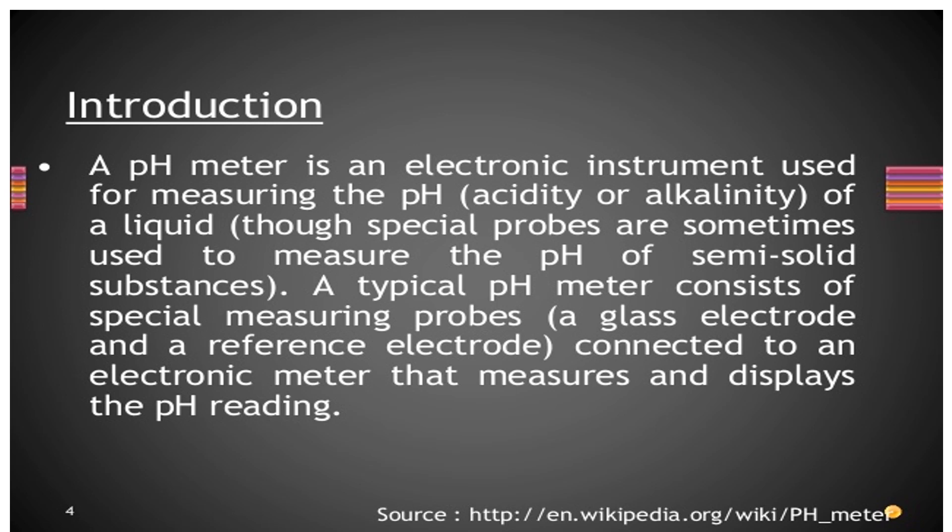A pH meter is an electronic instrument used for measuring the pH of a liquid. Special probes are sometimes used to measure the pH of semi-solid substances. A typical pH meter consists of a special measuring probe called the glass electrode and a reference electrode, connected to an electronic meter that measures and displays the pH reading.